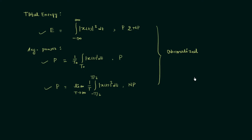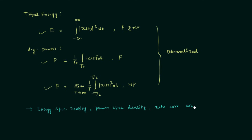Now we will understand the importance of signal energy and signal power calculations. These calculations are important for energy spectral density, power spectral density, autocorrelation, and SNR — signal to noise ratio — calculations. When we study the Fourier transform and Fourier series, the classification of signals as energy signals and power signals will be very helpful. In the next lecture we will understand what are energy signals.